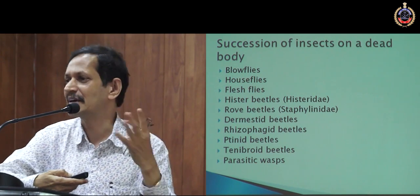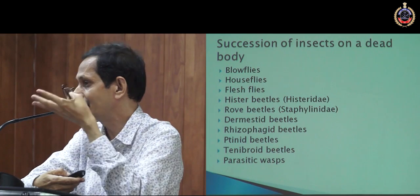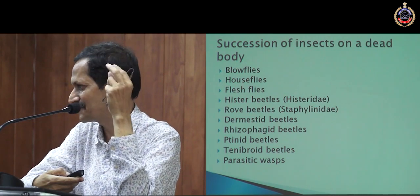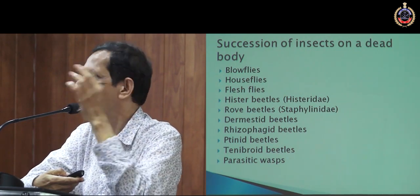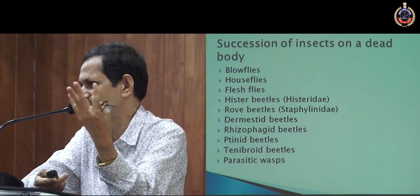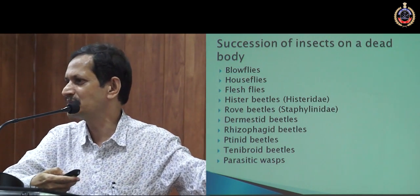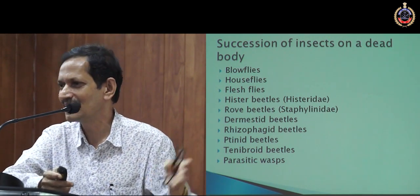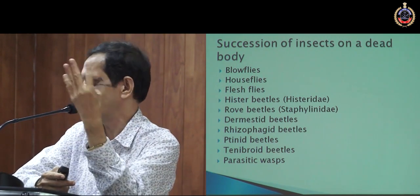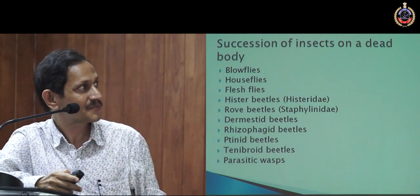There is a pattern of succession which helps us in calculating the time of death. If you see only blowflies, that means the death occurred very recently. If you see houseflies, it means a little more time. Then flesh flies arrive maybe the second to third day. Then different types of beetles arrive. So there is a clear pattern — blowflies first, then houseflies, then flesh flies, then the beetles.